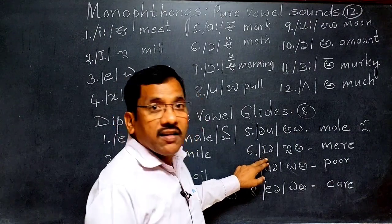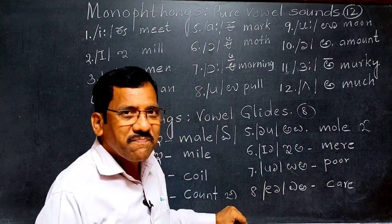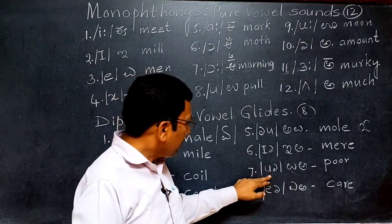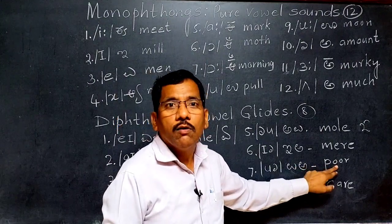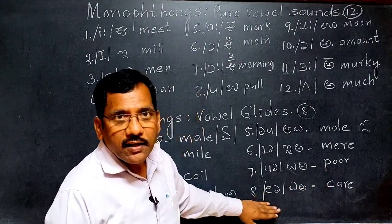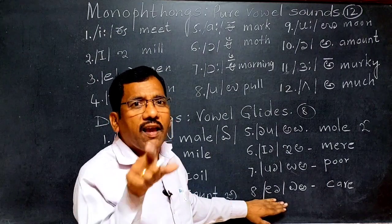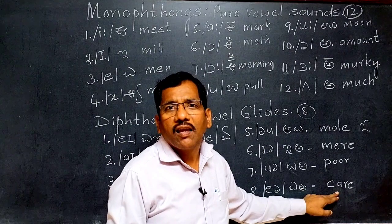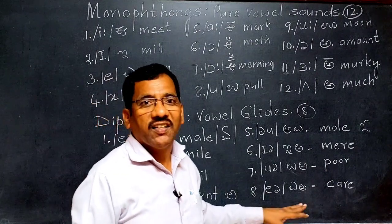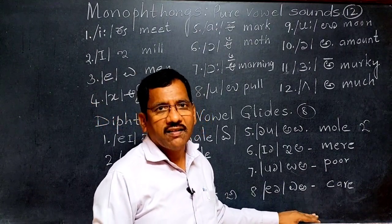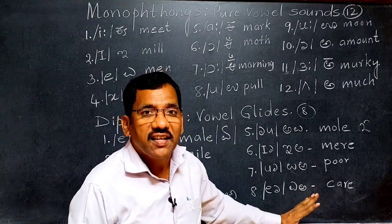The seventh diphthong is 'UA.' For example, 'poor.' The last, eighth diphthong is 'EA.' For example, 'air' or 'care.' In India we pronounce it as 'AA,' but in standard English we say 'care.' Don't say 'Sunday' the Indian way — say 'Sunday.' So the eighth diphthong is the 'EA' sound as in 'air.'